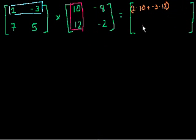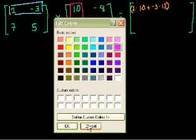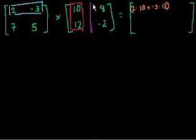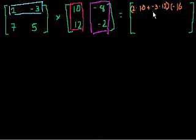And so what's this second term over here? Well, we're still in the first row of the product, but now we're in the second column, and we get our column information from here. So this is going to be 2 times minus 8, which is minus 16, plus minus 3 times minus 2. What's minus 3 times minus 2? That is plus 6. So that's in row 1, column 2 — it's minus 16 plus 6.